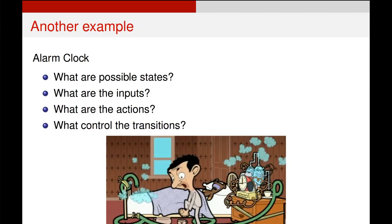Another example — which I'll get you to try yourself — is to think about an alarm clock with some very simple functionality, not like the one you can see in the picture. The alarm clock just has an alarm and a snooze button, and for simplicity, it is always active: it's either counting down to an alarm or it's in a snooze state. Stop the video and think about what states, inputs, and actions this finite state machine might have and what might control the transitions between them.